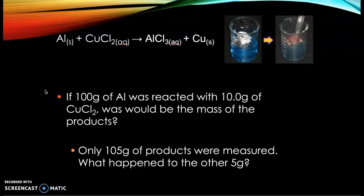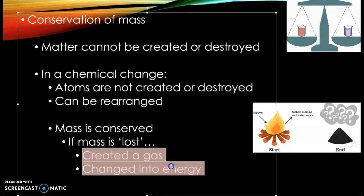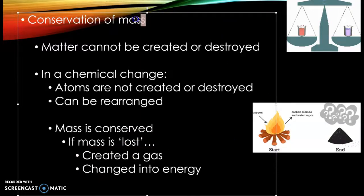This bit is talking about conservation of mass. You can't just make something out of nothing. If 100 grams of aluminum reacted with 10 grams of copper-2-chloride, what would be the mass of the product? It should be 110 grams. But when they measured, there's only 105 grams of products. What happened to the other five grams? Either a gas was created or it was changed into energy.